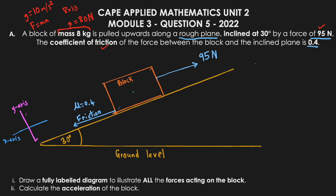Gravity pulls the object directly toward the ground, which is not aligned with either the x-axis or y-axis of our inclined coordinate system. The 80 newton gravitational force acts straight down. Because it doesn't lie along either axis, we need to determine both an x-component and a y-component that together make up this 80 newton force.